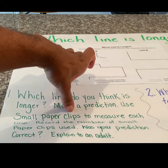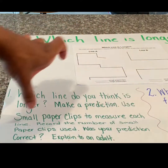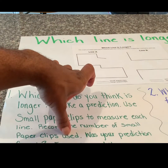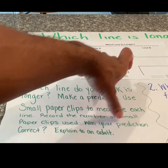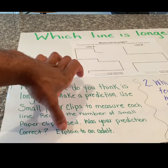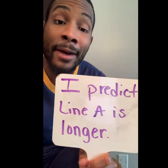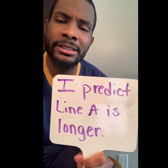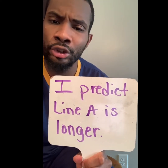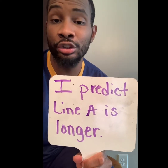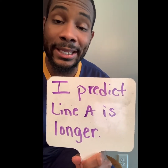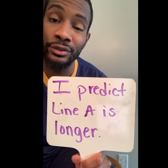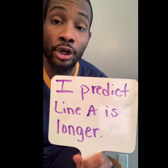Use small paperclips to measure each line. Record the number of small paperclips used. Was your prediction correct? Explain to an adult. So I believe that line A is going to be longer than line B, just because line B doesn't have as many turns or curves as line A. When you look at line A, you notice that we have a lot of turns and a lot of different lines and curves.